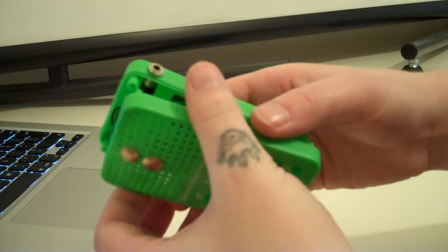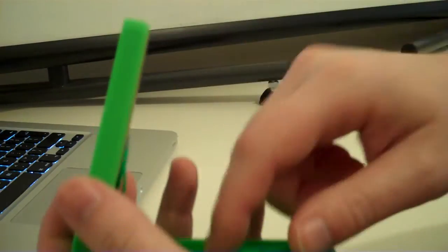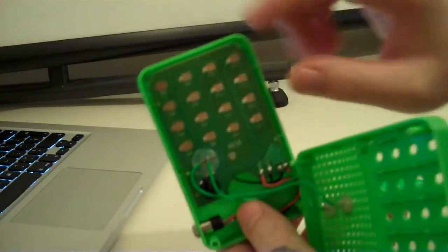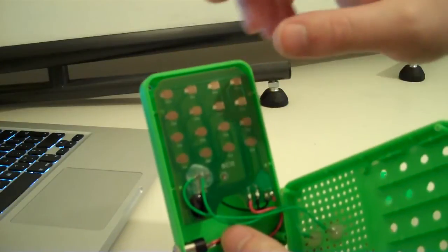Okay, we're inside now and you've just got a rubber membrane there, some little carbon pads on, and that's for the buttons on the bottom of the circuit board.